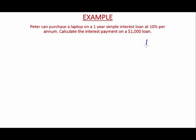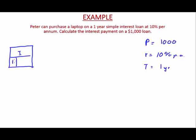We have principal, which is $1,000. We have our simple interest rate, which is 10% per annum, and our time is one year. It's already in a yearly basis, just like r, so that's fine. Now let's draw out our diagram: I, P, r, and T.